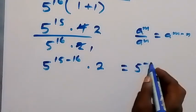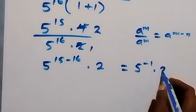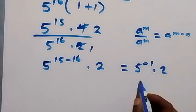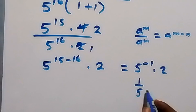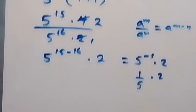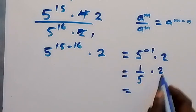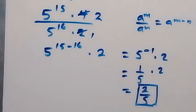Since 15 minus 16 equals minus 1, we have 5 raised to power minus 1 times 2. A negative exponent means 1 over 5 raised to power 1, and 5 raised to power 1 is 5. So that's 1 over 5 times 2, which equals 2 over 5. The solution to this problem is 2 over 5.